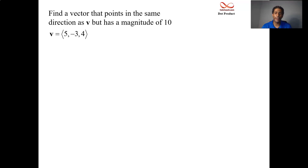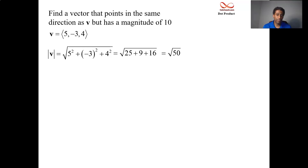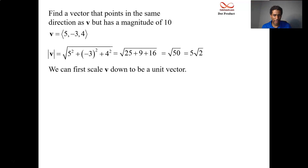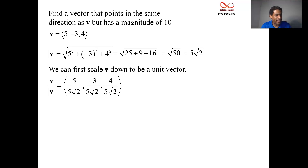This idea is the work behind the scenes. So your vector is (5, -3, 4) and you want to find its magnitude — find out how long that vector is. Square each component, add them together, take a square root, and you'll find out that it ends up being √50, or 5√2. That's less than 10. So we have this vector whose length is 5√2, and I want the vector whose length is 10 pointing in the same direction. To do that, we scale down our vector to be length 1 — find the magnitude and divide each component by it, basically scale by the reciprocal of the magnitude.